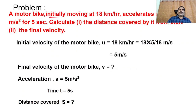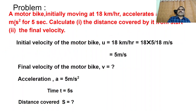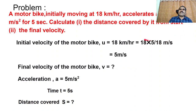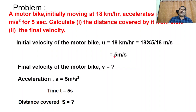The motor bike is moving initially at 18 kilometers per hour. The acceleration is 5 meters per second square — this is in SI system. So we have to convert kilometers per hour into SI system. Initial velocity U equals 18 km/h. To convert km/h to m/s, multiply by 5 by 18 — because 1 km/h equals 1000 meters divided by 3600 seconds, which simplifies to 5 by 18. So U equals 18 into 5 by 18 equals 5 meters per second.